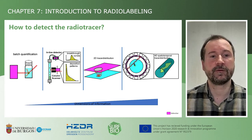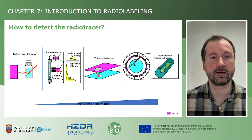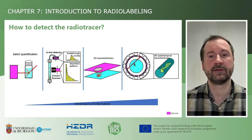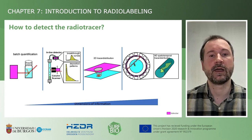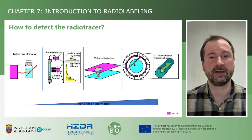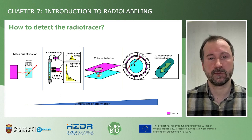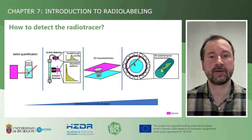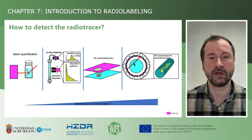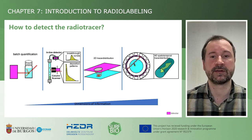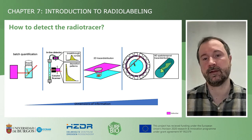And using, for example, positron emission tomography, you can obtain detailed spatiotemporal distribution data of the radiotracer, albeit at a lower resolution of about one millimeter. All of these methods can detect the radiotracer over several orders of magnitude at minimal concentrations down to the femtomole scale.